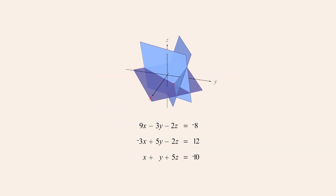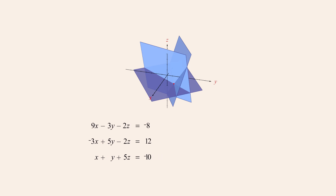Since both systems of planes intersect at the same point, they both have the same solution and are therefore equivalent. We have seen that solving a system of linear equations using the elimination method involves performing a series of operations which simplify the equations by eliminating variables, producing an equivalent system of equations which indicate the solution set of the system.